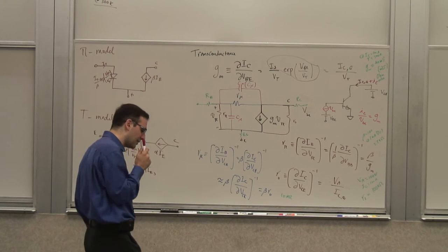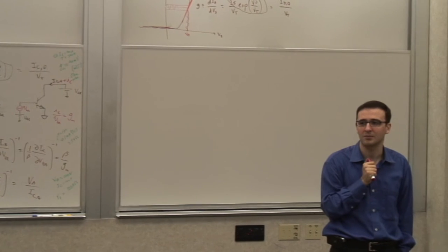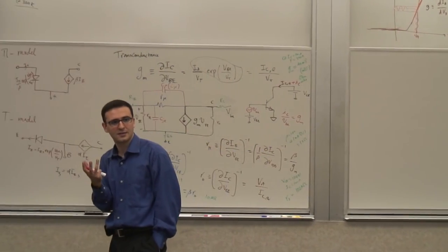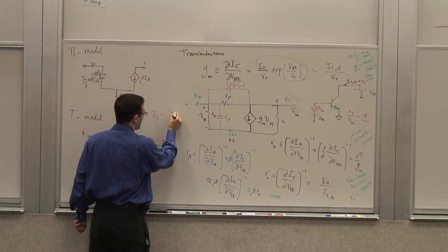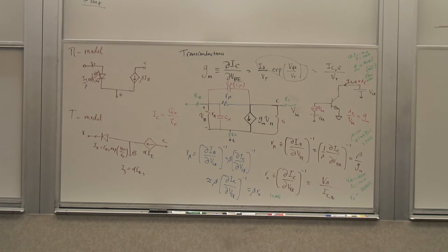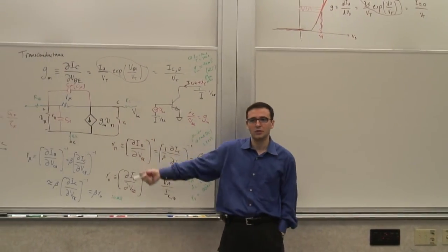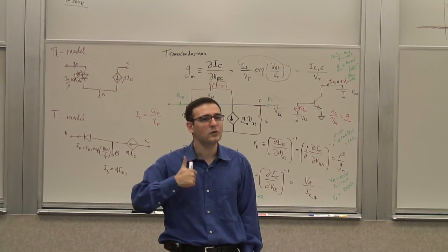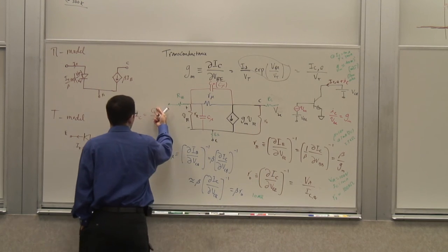In addition to these two junction capacitors, there's another charge-storage mechanism — the buildup of minority carrier charge in the base, QF, the diffusion capacitance. We said the collector current IC = QF / tau_F, where tau_F is the average transit time across the base. So if you have an average net charge of QF and it takes tau_F to cross, the net current is their ratio.